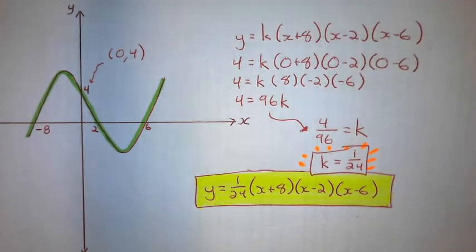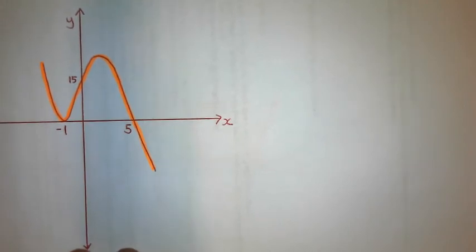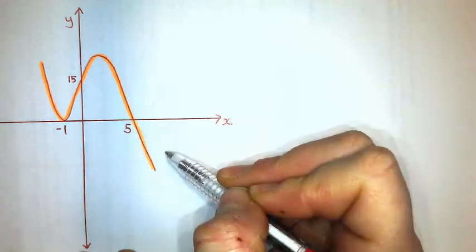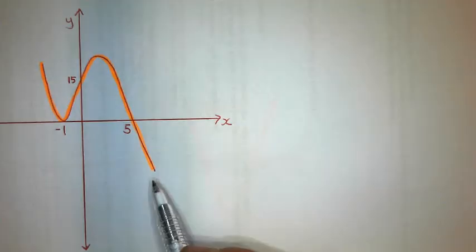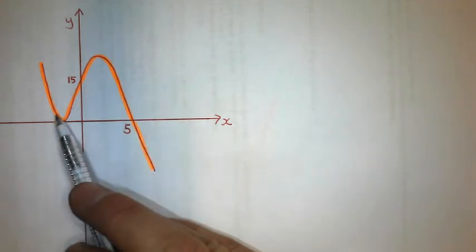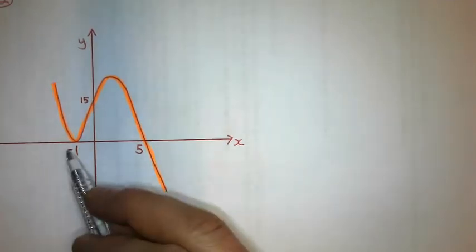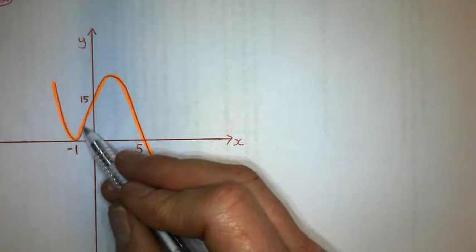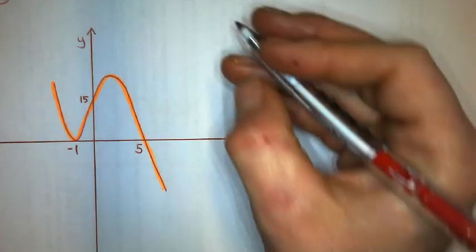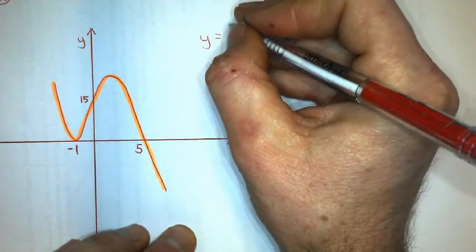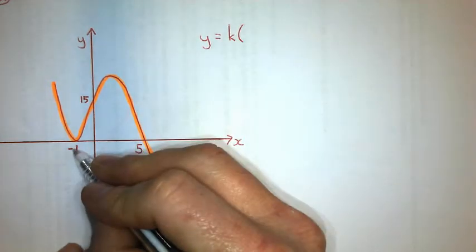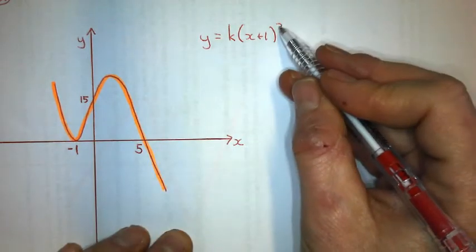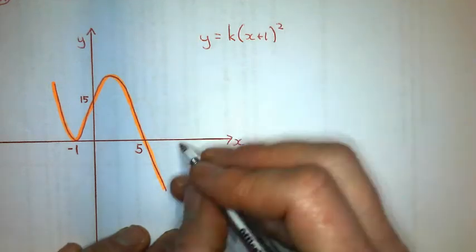Let's look at another example. This graph goes down, up, down, so my coefficient k is going to be negative. This is one of those examples where a factor repeats itself — the curve bounces off the x-axis at negative one. So my general form is y = k(x + 1)²(x − 5).